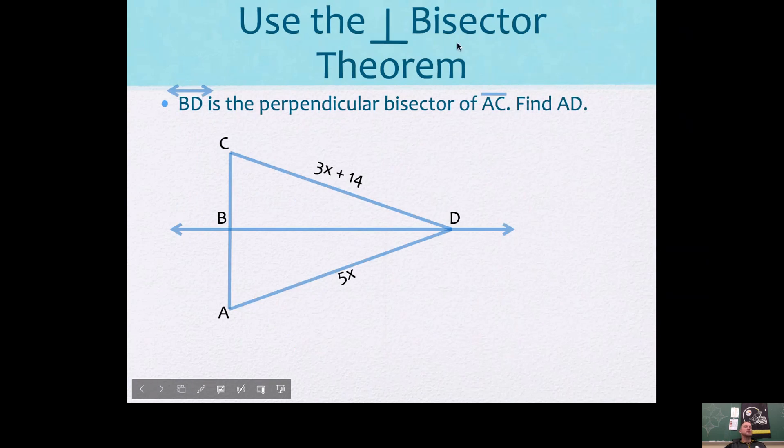Here's an example. Let's use the perpendicular bisector theorem. Segment BD, or line BD, is the perpendicular bisector of segment AC. So let's mark that. If it's a perpendicular bisector, we have a right angle, and we have congruent segments there. Find the distance from A to D.